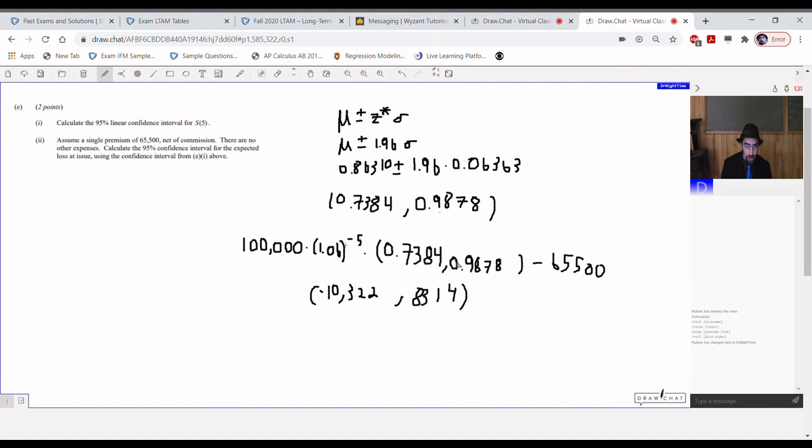And finally, the last part, calculate the 95% linear confidence interval for S5. This is something that should be basic to you, assuming you took exam P. Linear confidence interval is just going to be mean plus critical Z value times sigma. You probably have committed to memory that for 95% confidence interval, Z critical is 1.96. So mean is 0.86310, standard deviation calculated to be 0.06363. We do mean plus 1.96 times standard deviation or plus or minus 1.96 times standard deviation. We get that 95% confidence interval is 0.7384 to 0.9878.